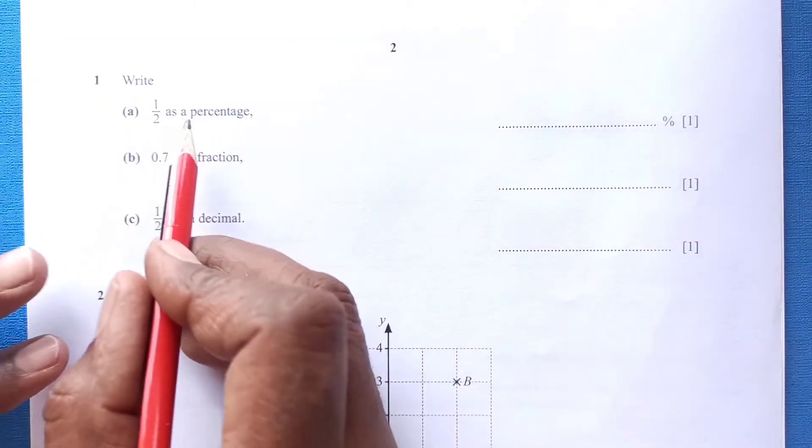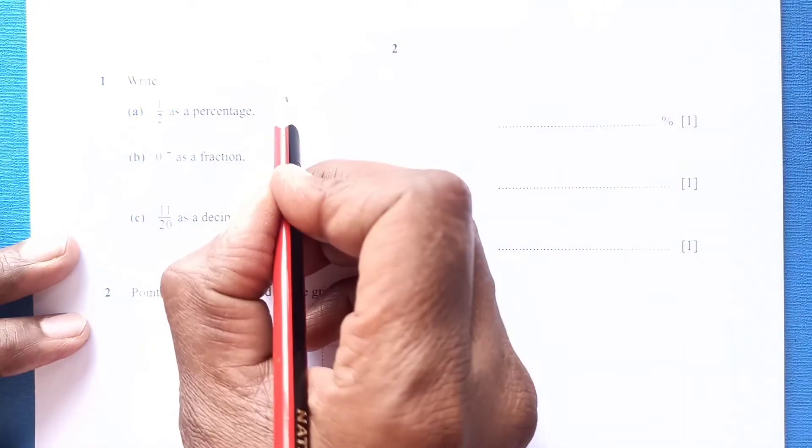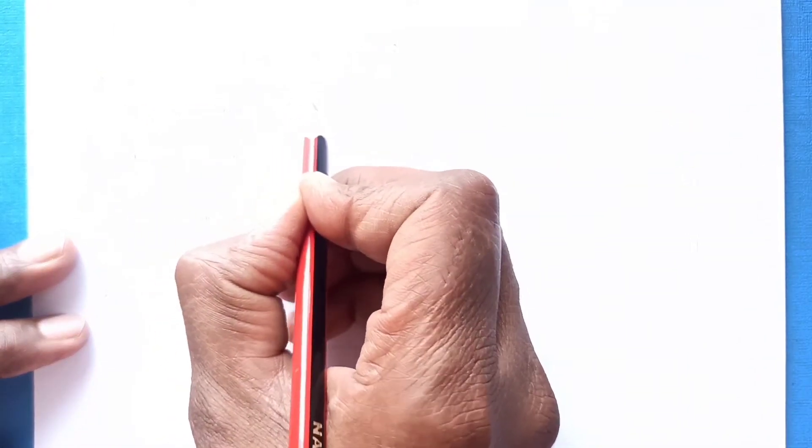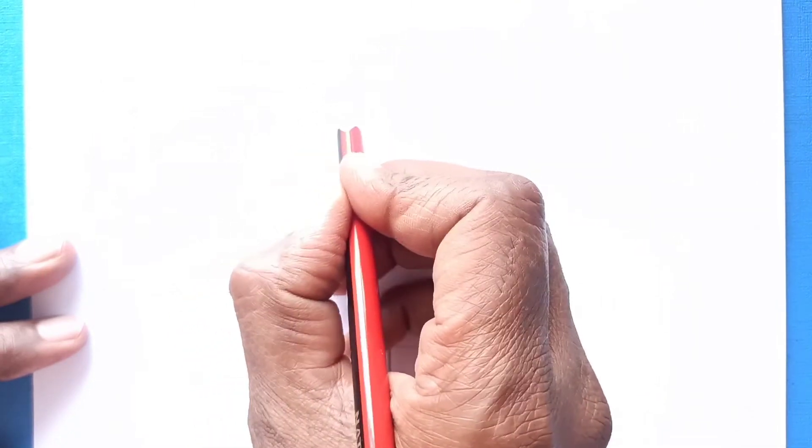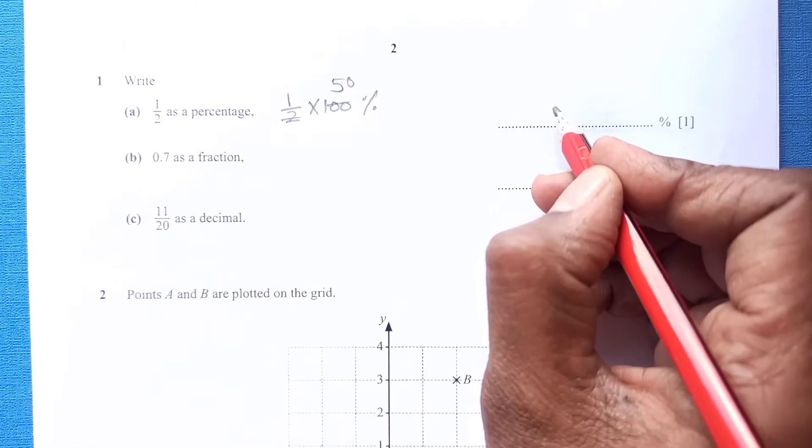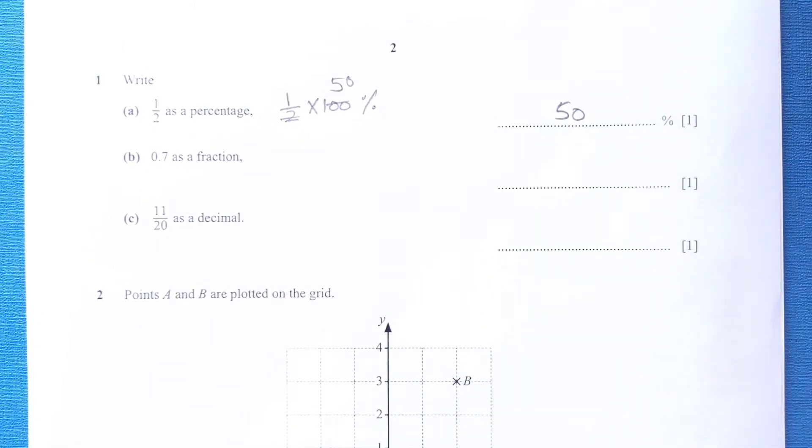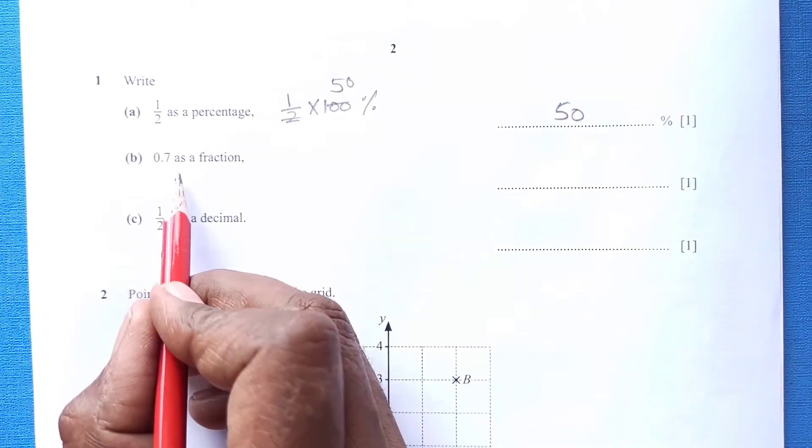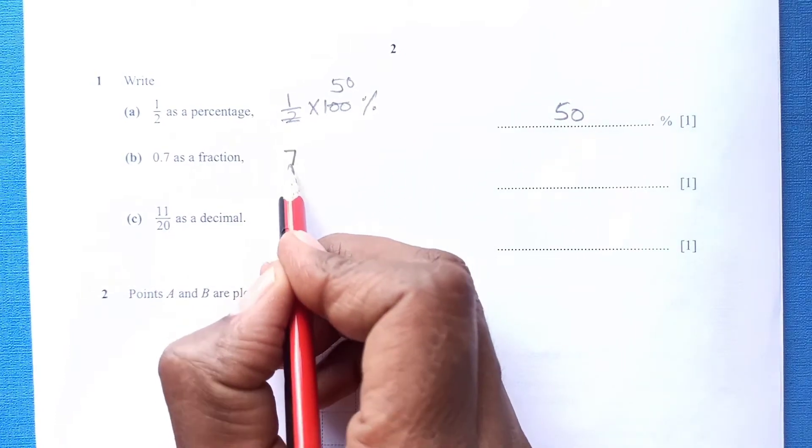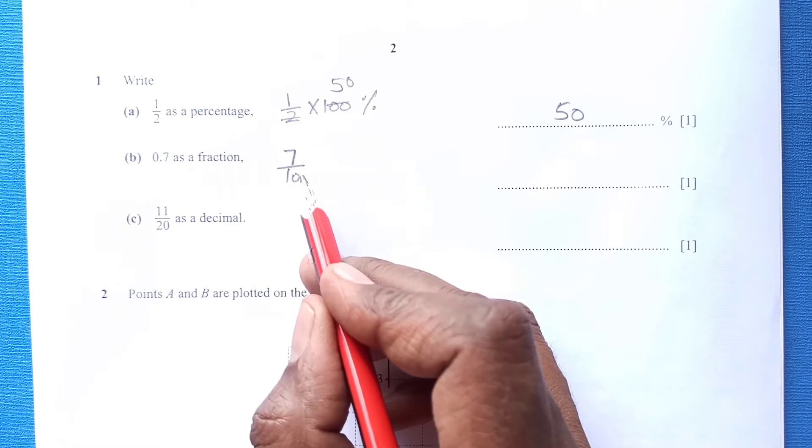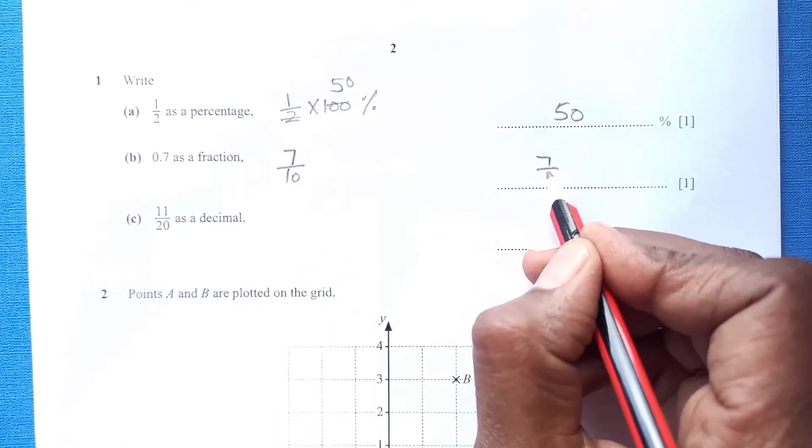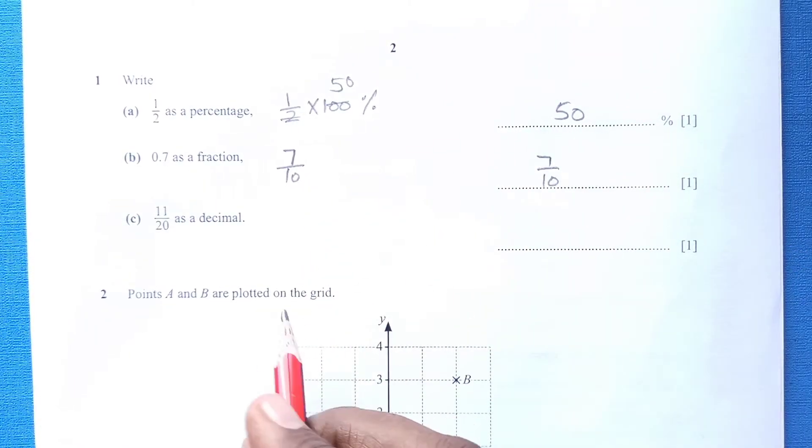Question 1: Write 1 over 2 as a percentage. 1 over 2, we have to multiply it by times 100. That will give you percent. This is 50, so this is going to be 50 percent, the final answer. 0.7 as a fraction, this will be 7 over 10. That is not possible to simplify, so 7 over 10 is the final answer.